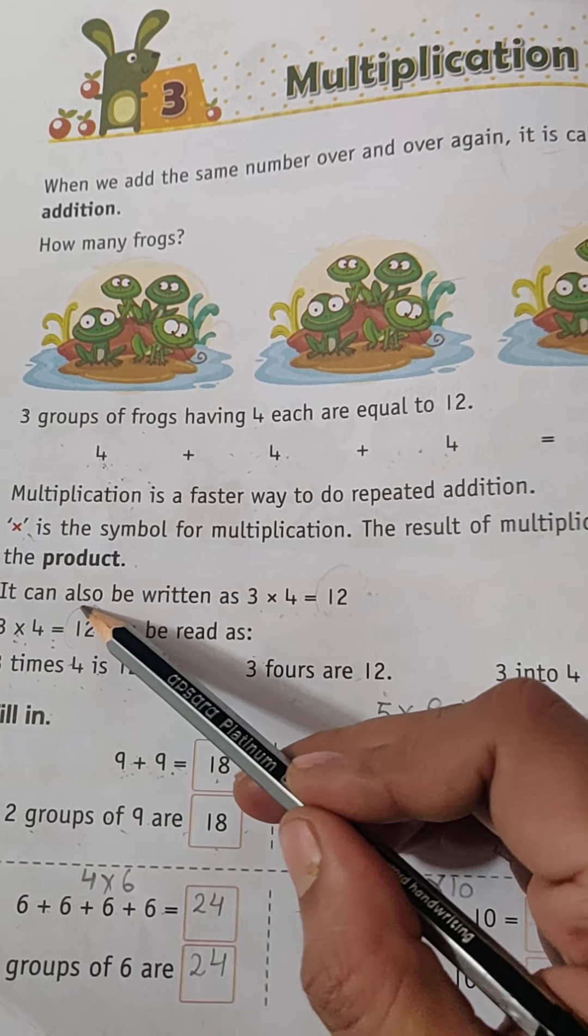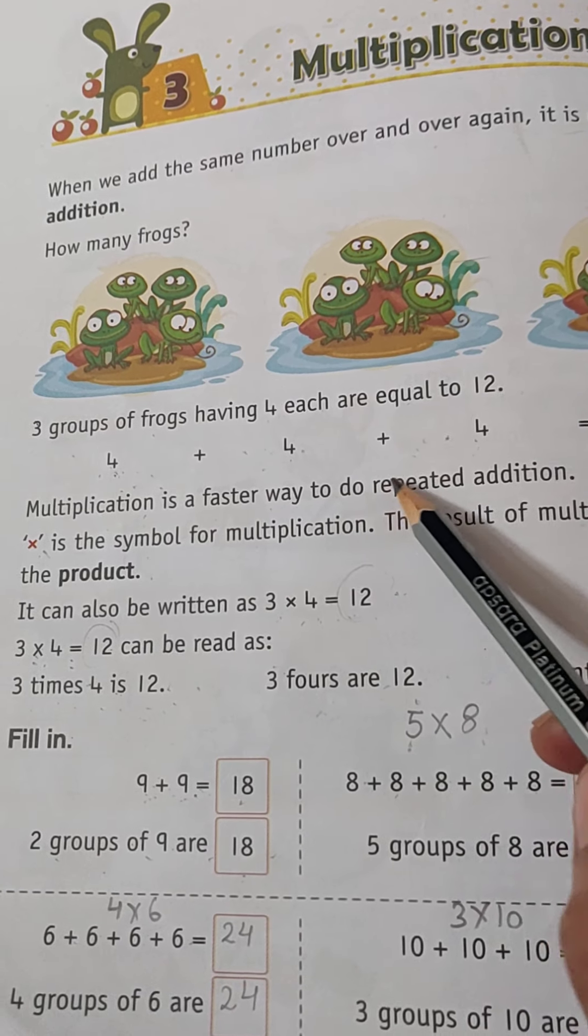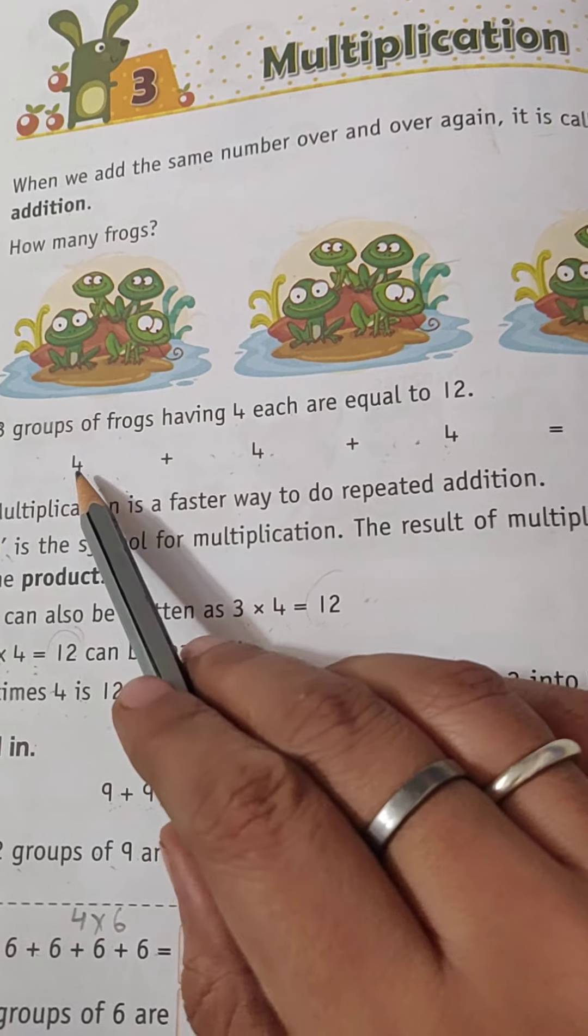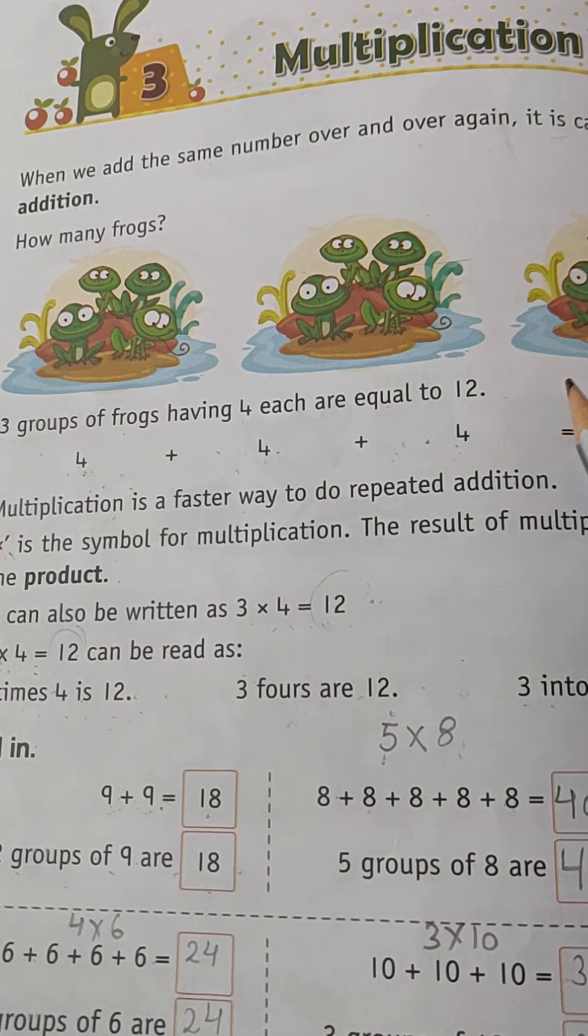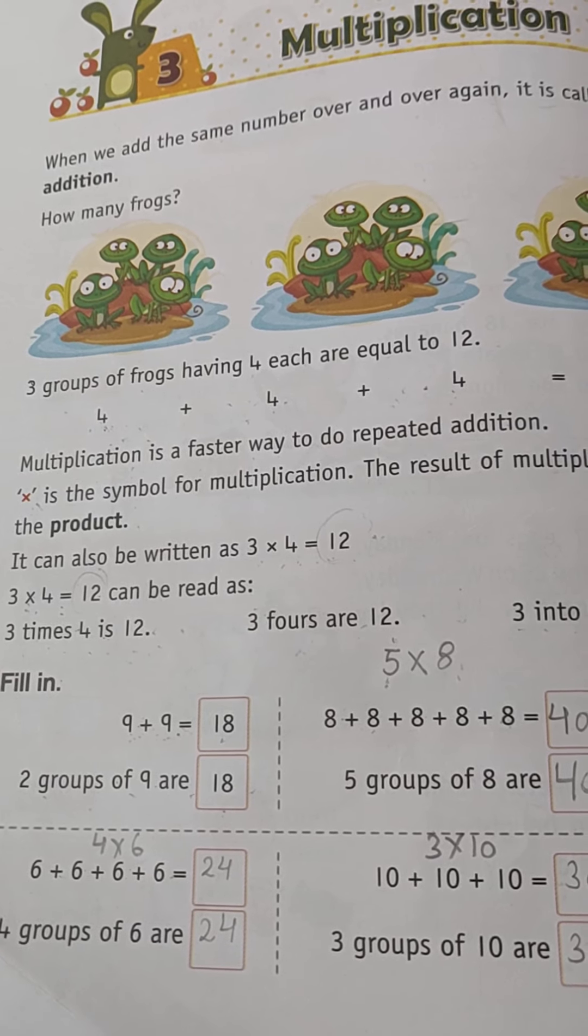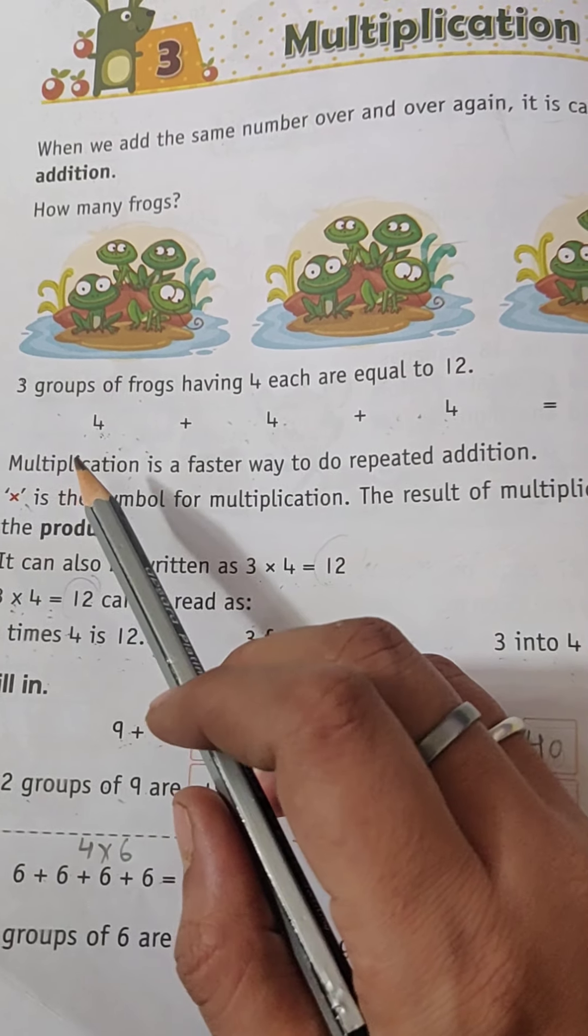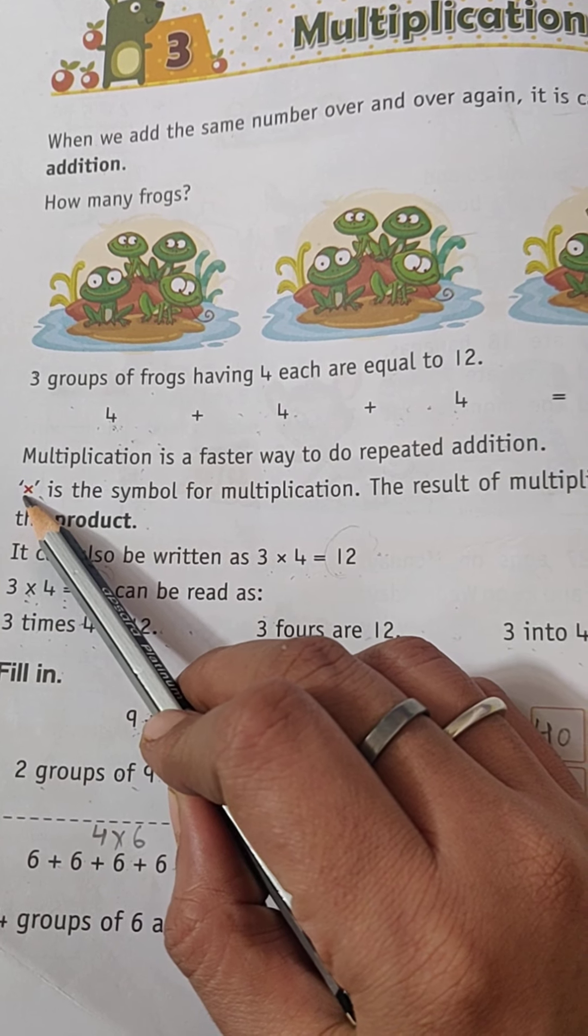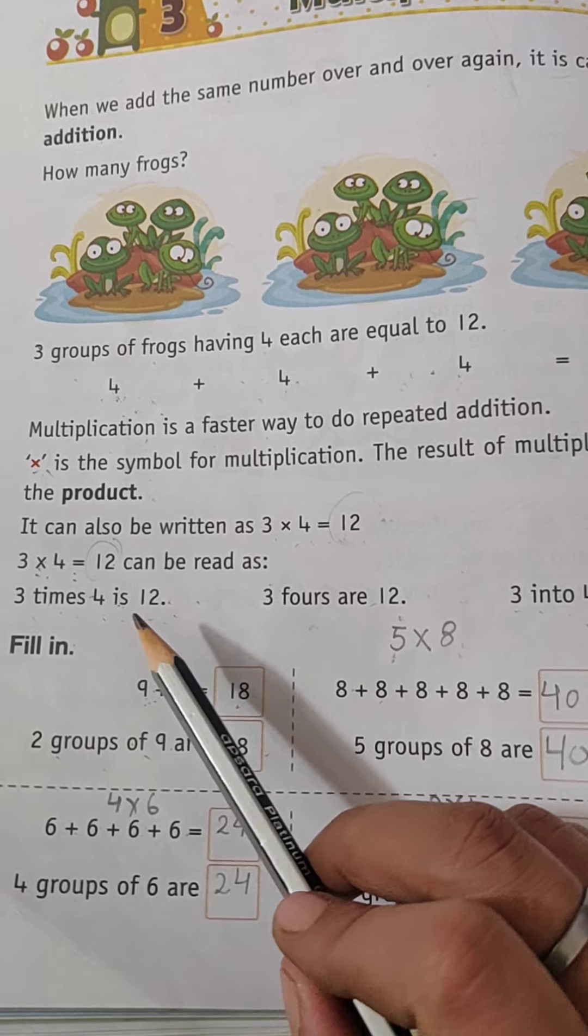When we multiply, the answer which we get is called the product. 12 is called the product and multiplication is a faster way to do repeated addition. It will just save your time because when you add again and again it will take much time, so multiplication is much easier and a much faster way.